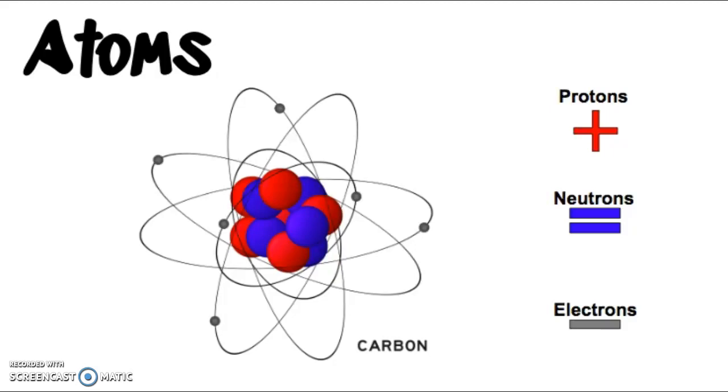Atoms are made of three things: protons, neutrons, and electrons. Protons have a positive charge, neutrons have a neutral charge, and electrons have a negative charge. Atoms are the building blocks of all matter, but these three particles are going to make up the atoms.